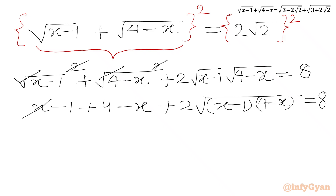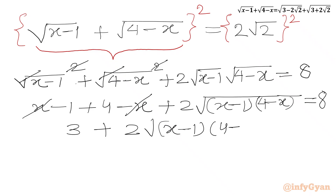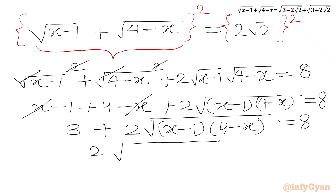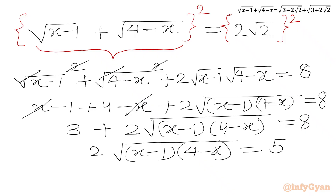Now x minus x cancels, and 4 minus 1 is 3. So we can write: 3 plus 2 times square root of (x minus 1)(4 minus x) equals 8. Taking 3 to the RHS, we get: 2 times square root of (x minus 1)(4 minus x) equals 8 minus 3, which is 5.